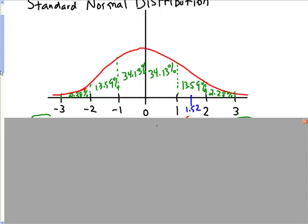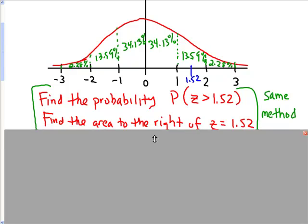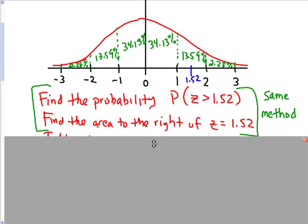The first thing I want to look at here is finding the probability of z being greater than a value, and the value in this case happens to be 1.52, or finding the area to the right of z equals 1.52. Remember, this is the same thing.